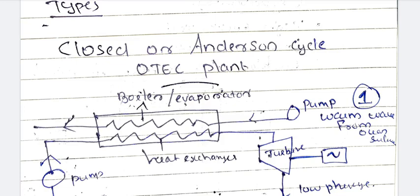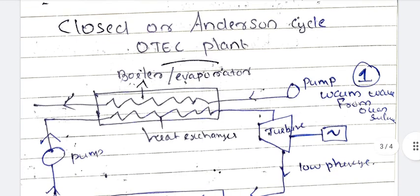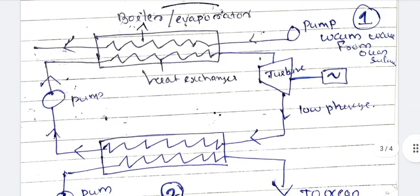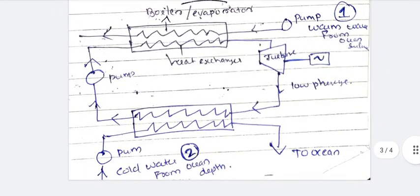The types of OTEC plant include Closed type, also called the Anderson Cycle. In the closed cycle, warm water from the ocean surface is used in an evaporator — a heat exchanger. The working fluid in the boiler produces steam. The steam is then used to drive the turbine.